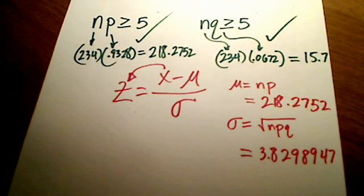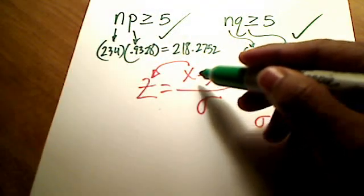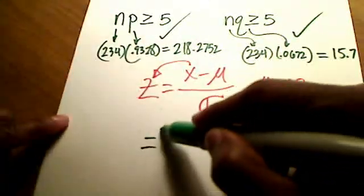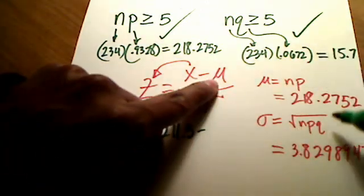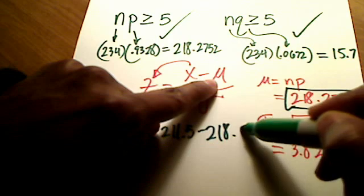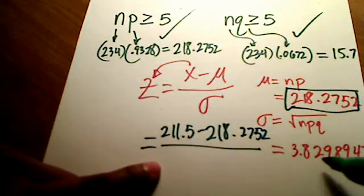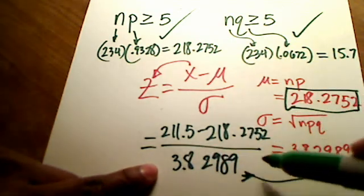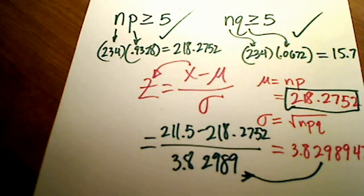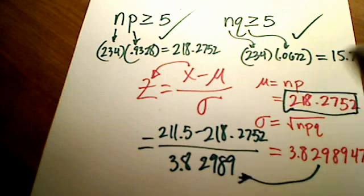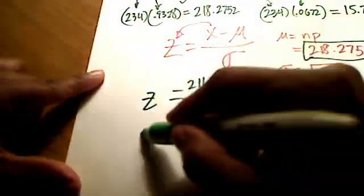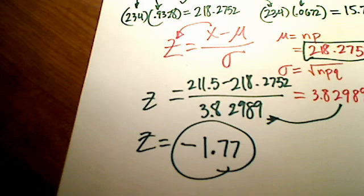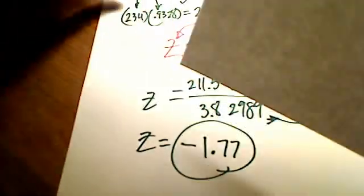To finish this problem, I have x = 211.5 (from continuity correction), mean = 218.2752, and standard deviation = 3.82989. The z-score formula gives (211.5 - 218.2752) / 3.82989. If you do that on your calculator, you should get a z value of negative 1.77, rounded to two decimal places.